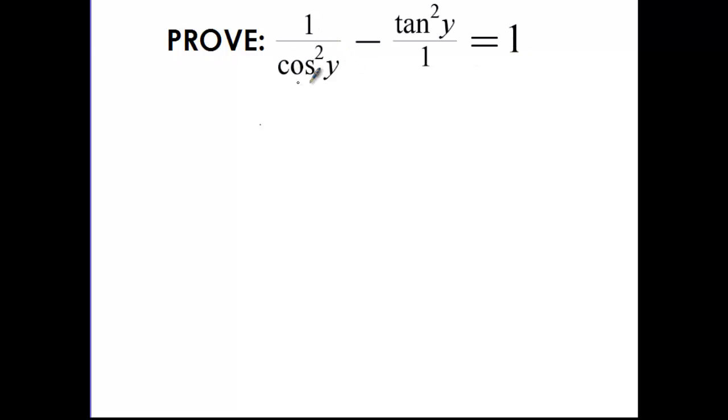So on the denominator here I have cosine squared y and over here I have 1. So that means I only have to change this side. So I'm going to leave the 1 over cosine squared y and I'm going to change this side.